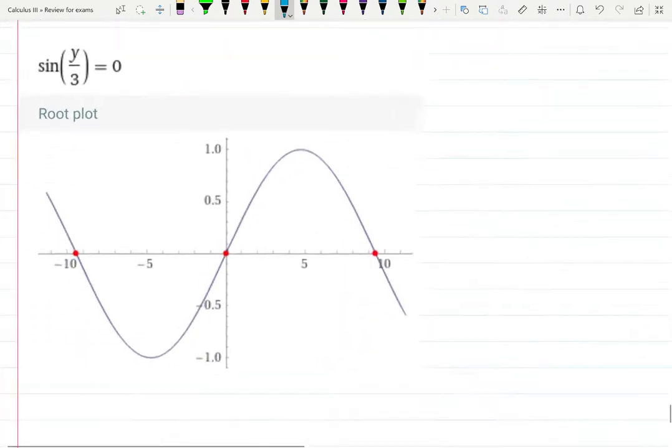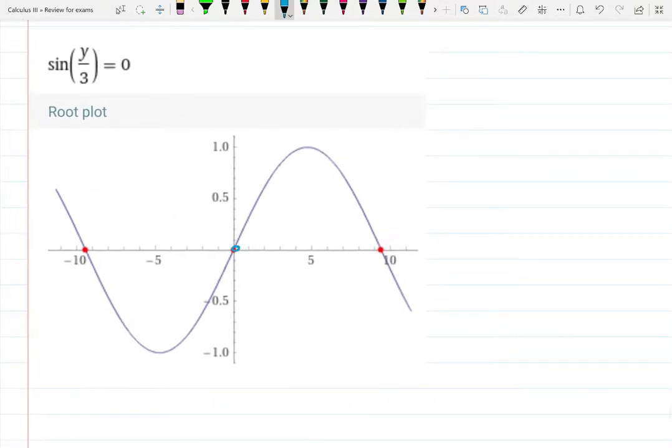I even have the graph for you. When does sin(y/3) give you zero? At these points: zero, 3π, -3π, and keep going.